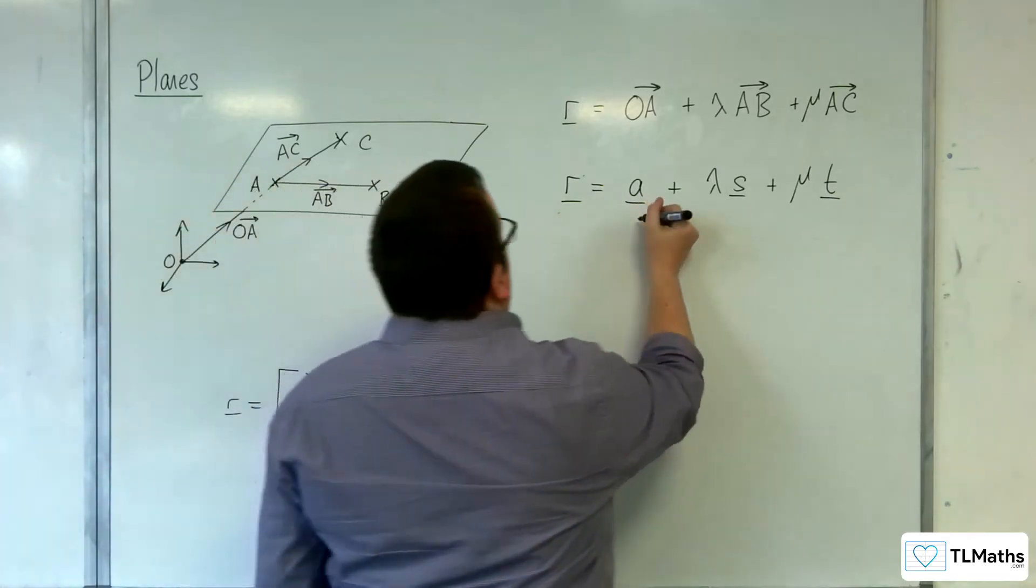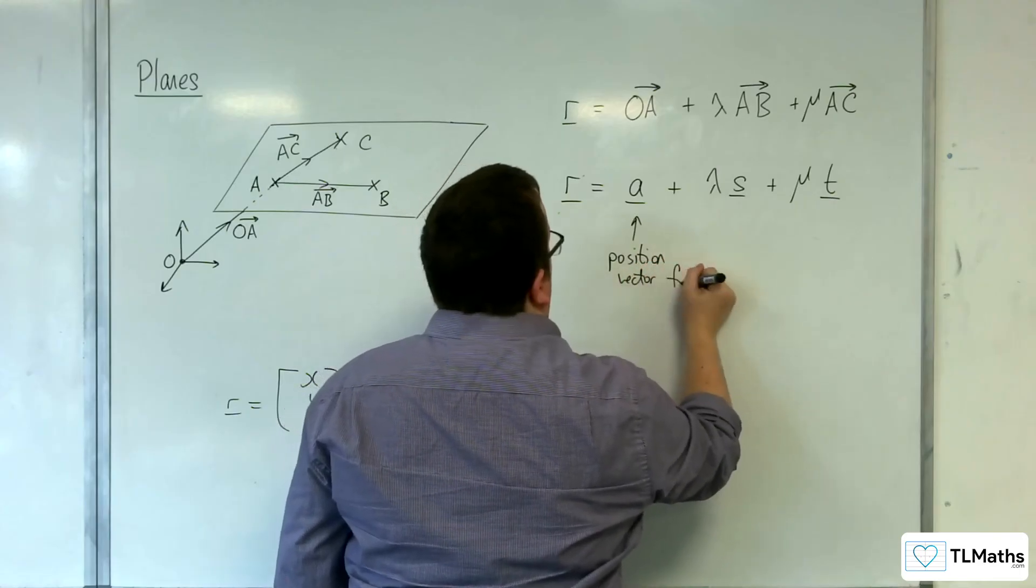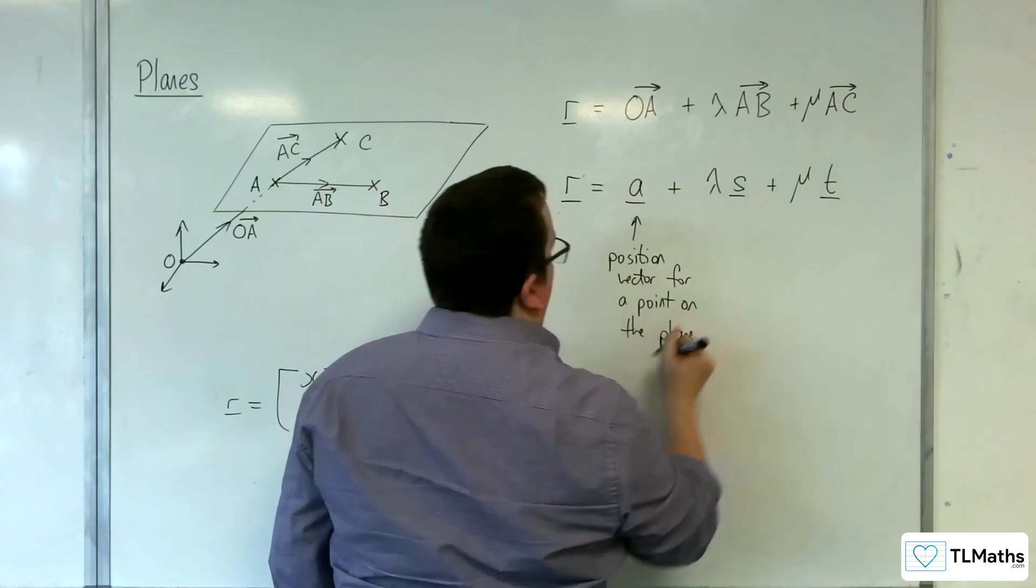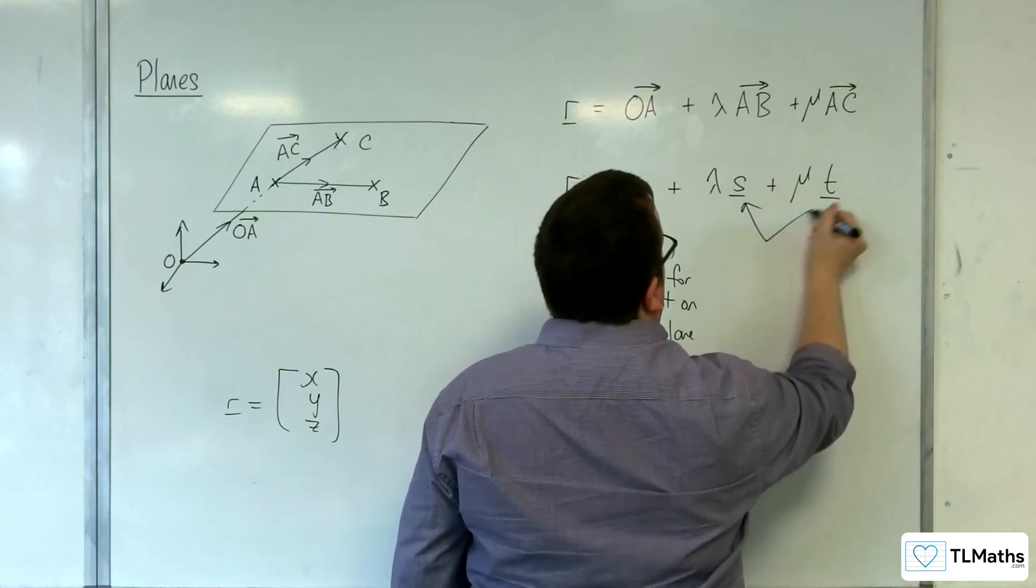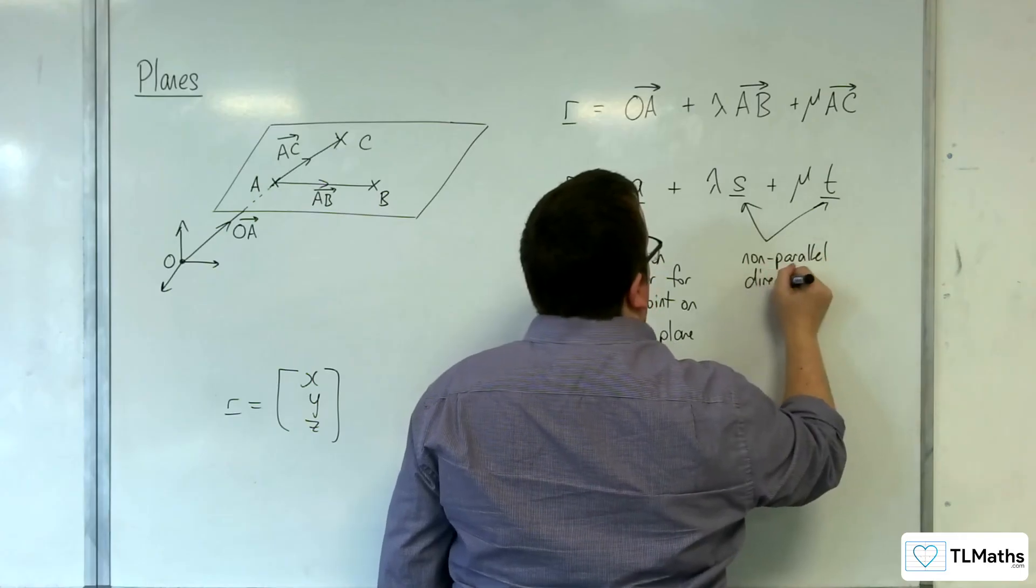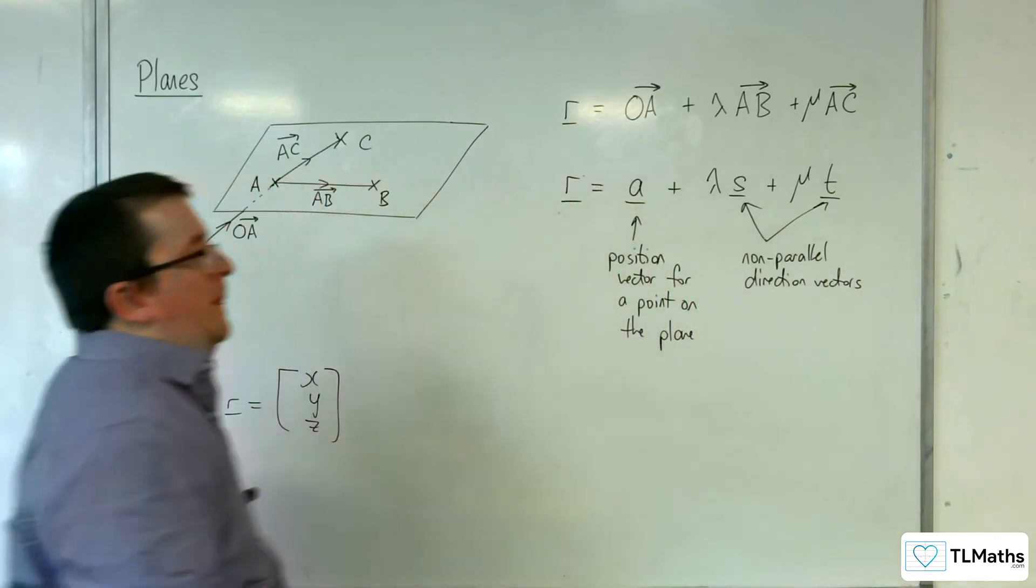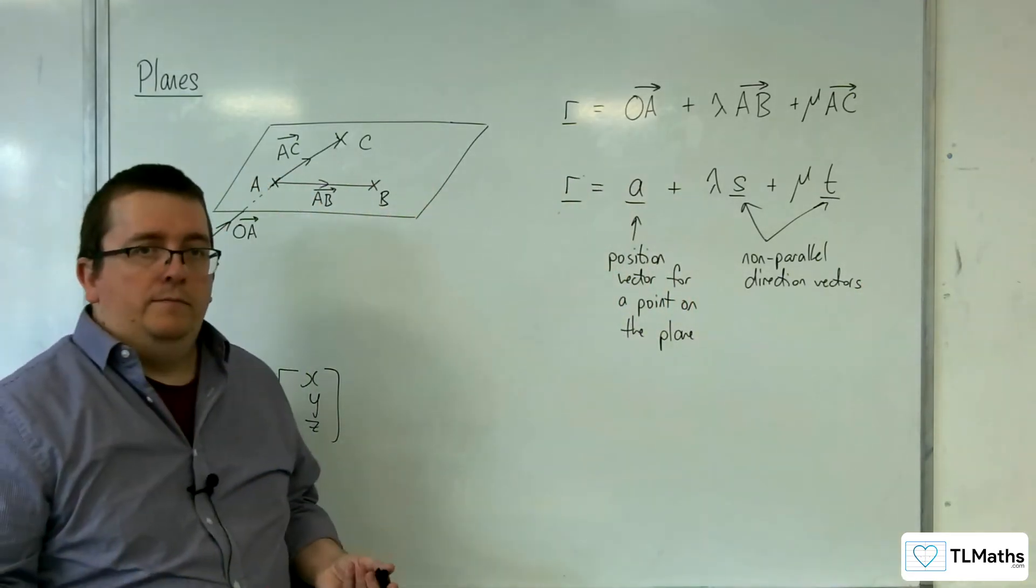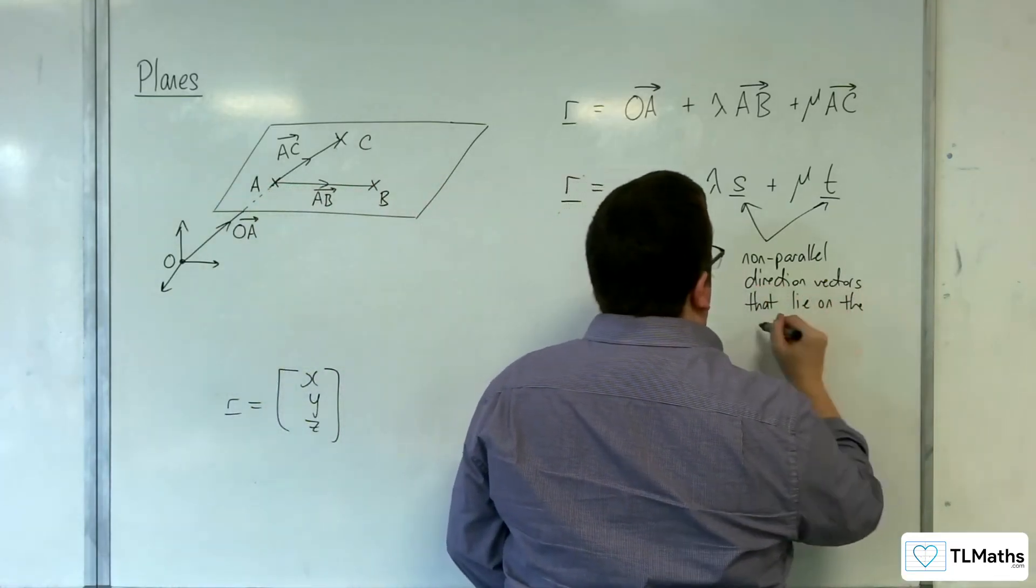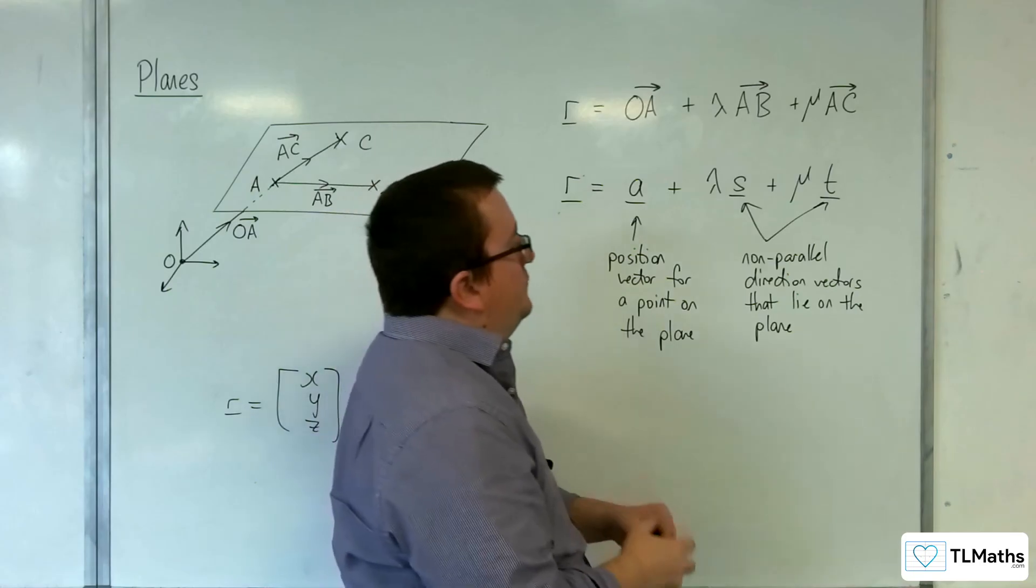So this is a position vector for a point on the plane, and these are non-parallel direction vectors that lie on the plane or parallel to the plane.